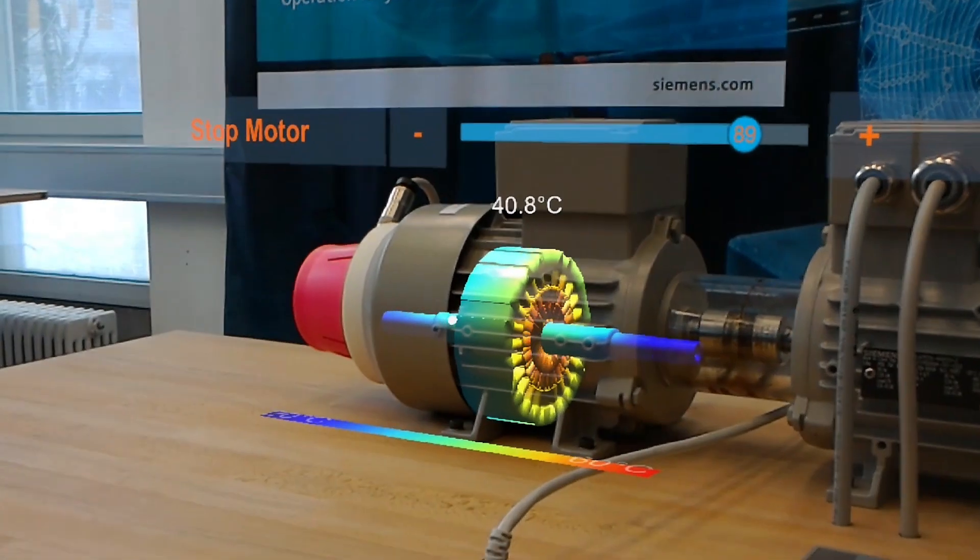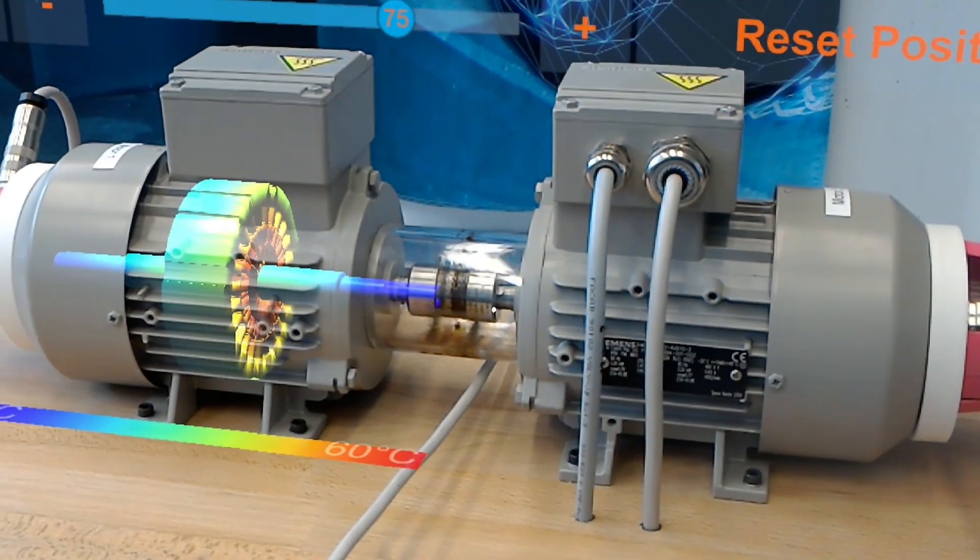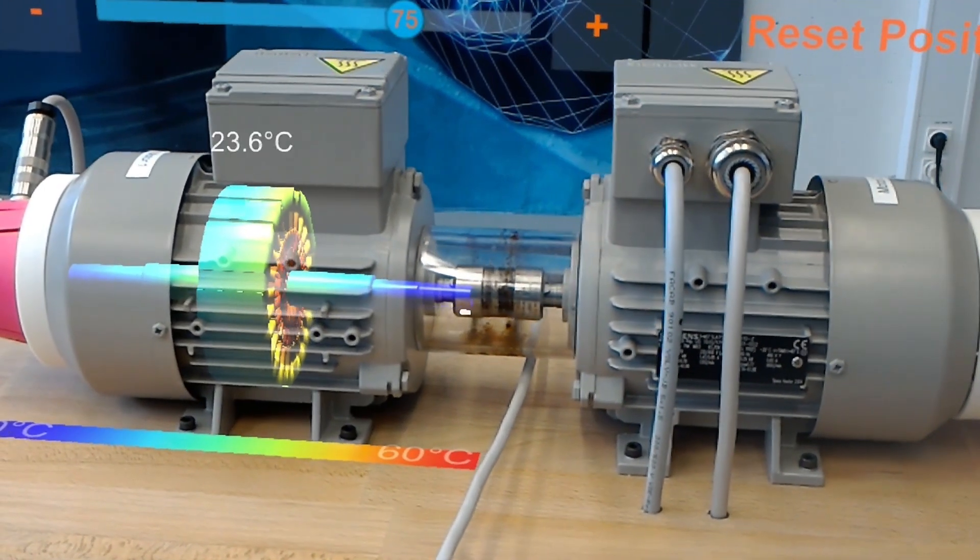So by giving detailed temperature information to the operator, he can look inside the motor, knows when the motor is cool enough to be switched on again, and this allows him to switch on the motor earlier.